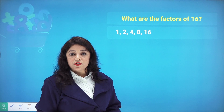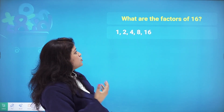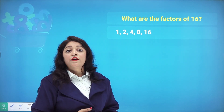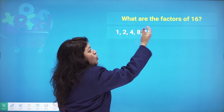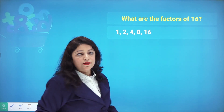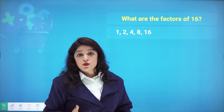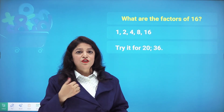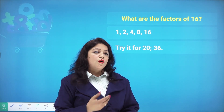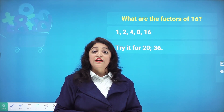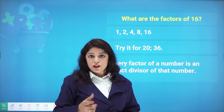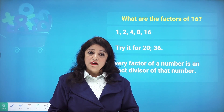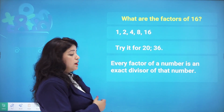Let's take a few more examples. The factors of 16 are 1, 2, 4, 8, and 16, as we've already seen. When you divide 16 by any of these numbers, the remainder is 0. You can try the same for 20, 36, or any number of your choice. Every factor of a number is an exact divisor of that number.